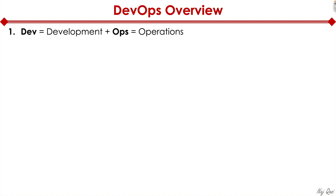So what does it stand for? It comes from two different terms: software development — that's the dev piece of it — and network operations — that's the ops in the DevOps. So when we combine the two together, we get the term DevOps.